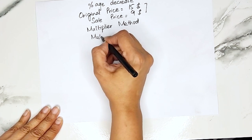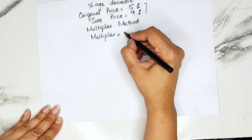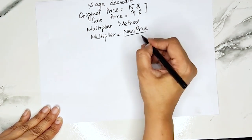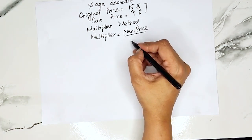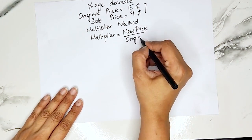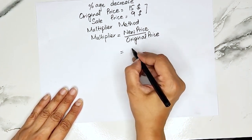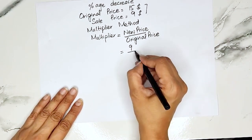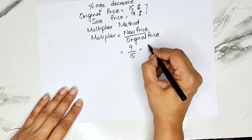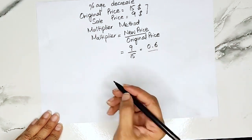To find the value of the multiplier, we write: new price — that is the sale price — divided by the original price. The original price is $15, so 9 divided by 15 is 0.6. This is the value of the multiplier.